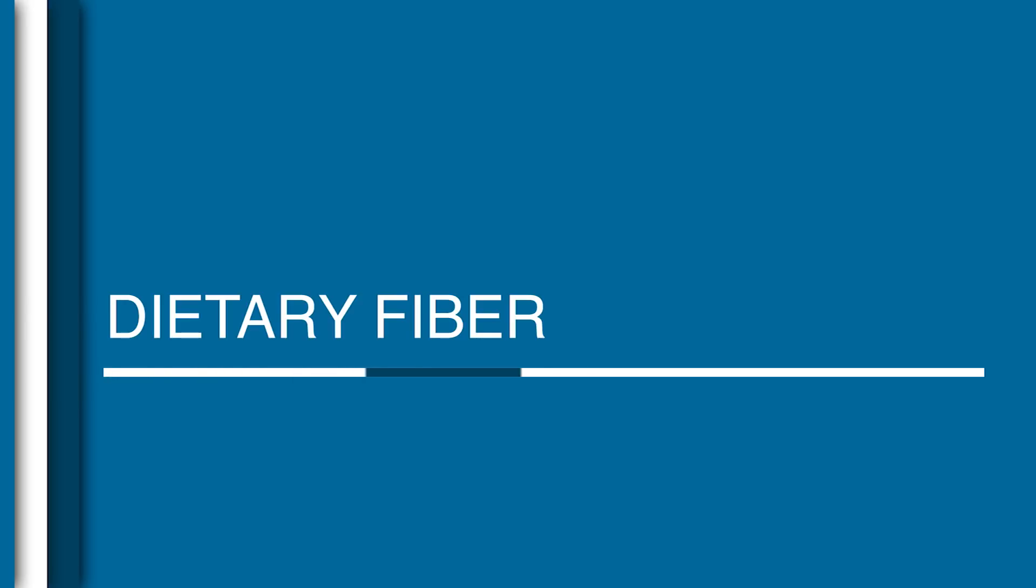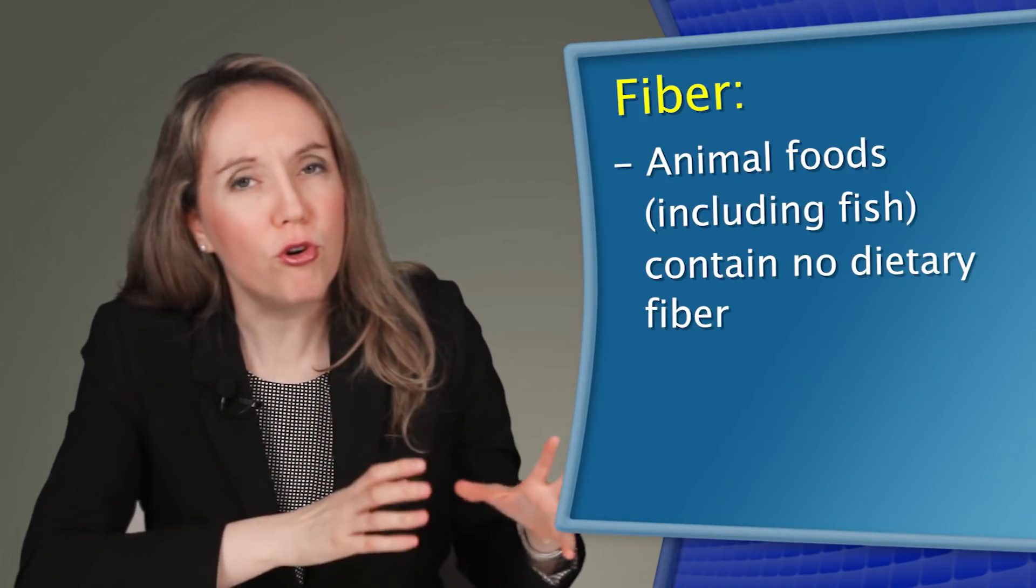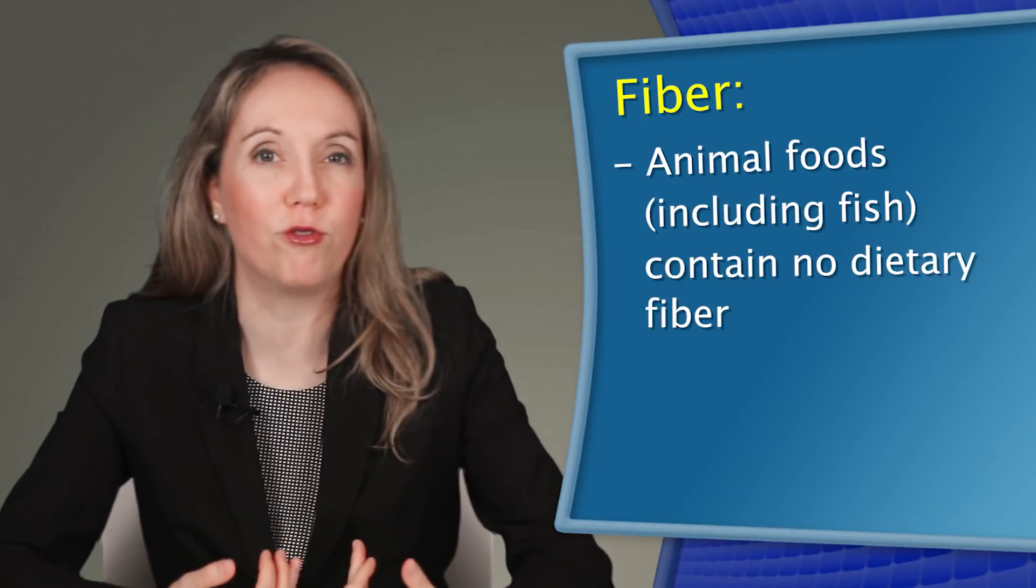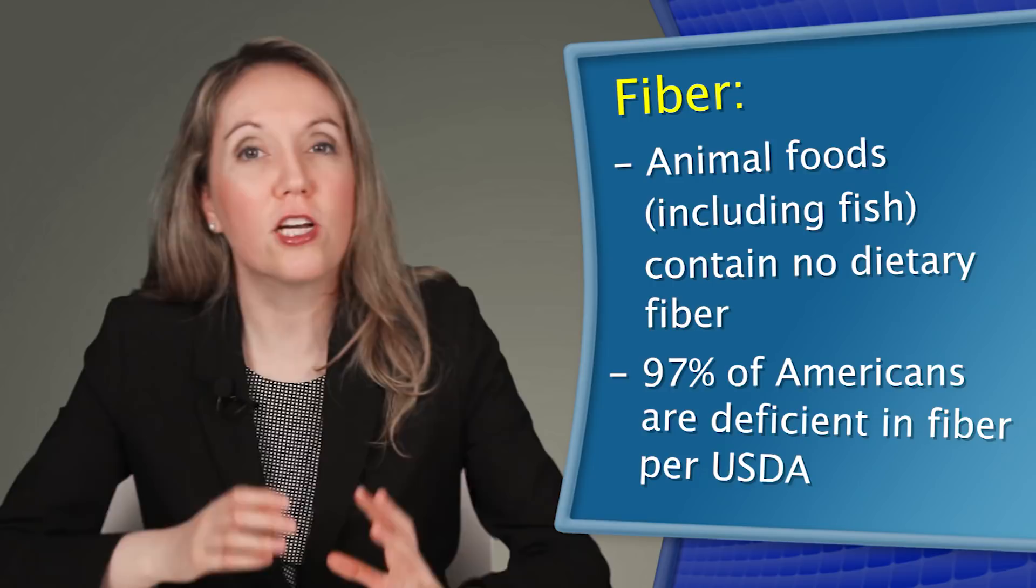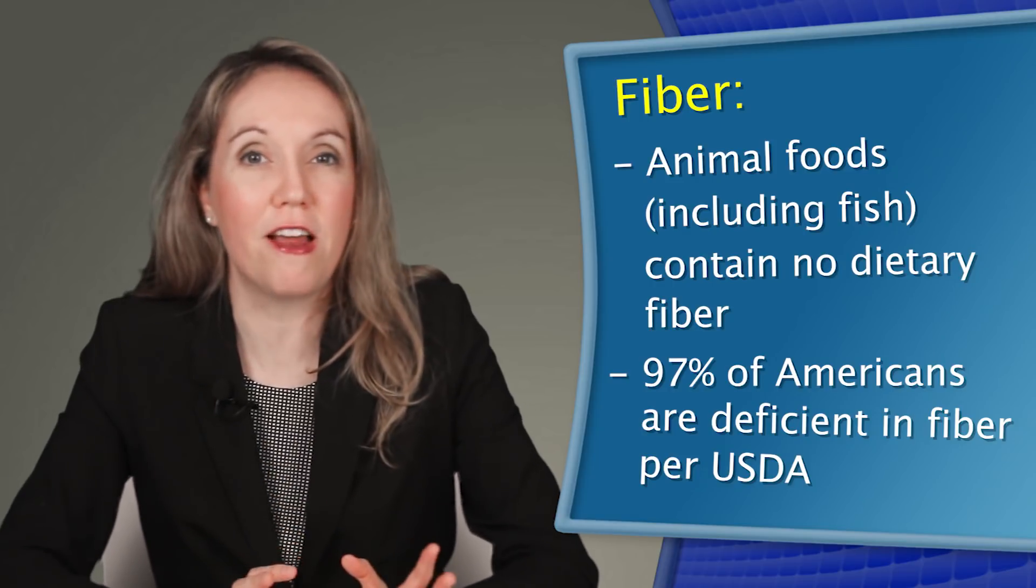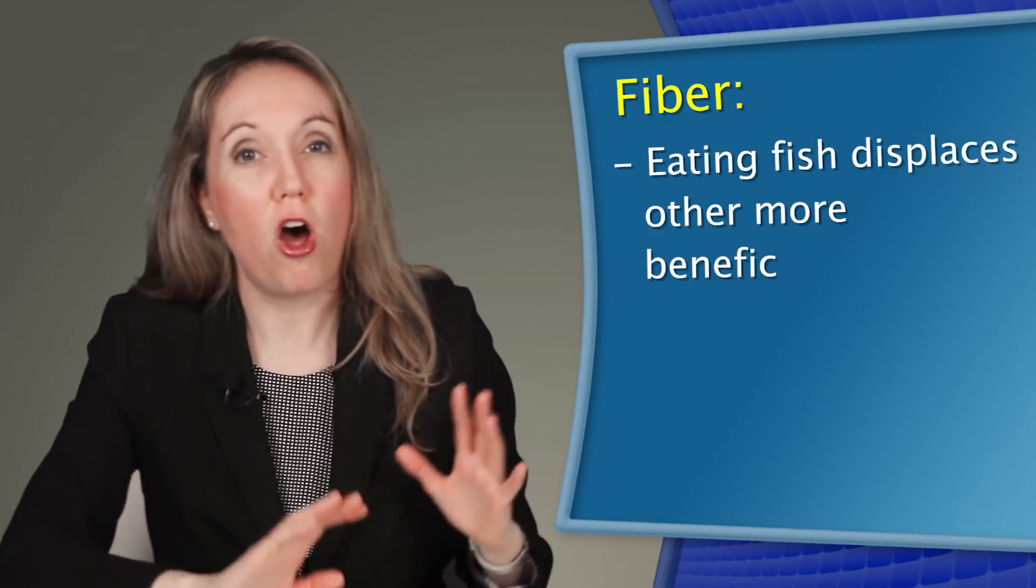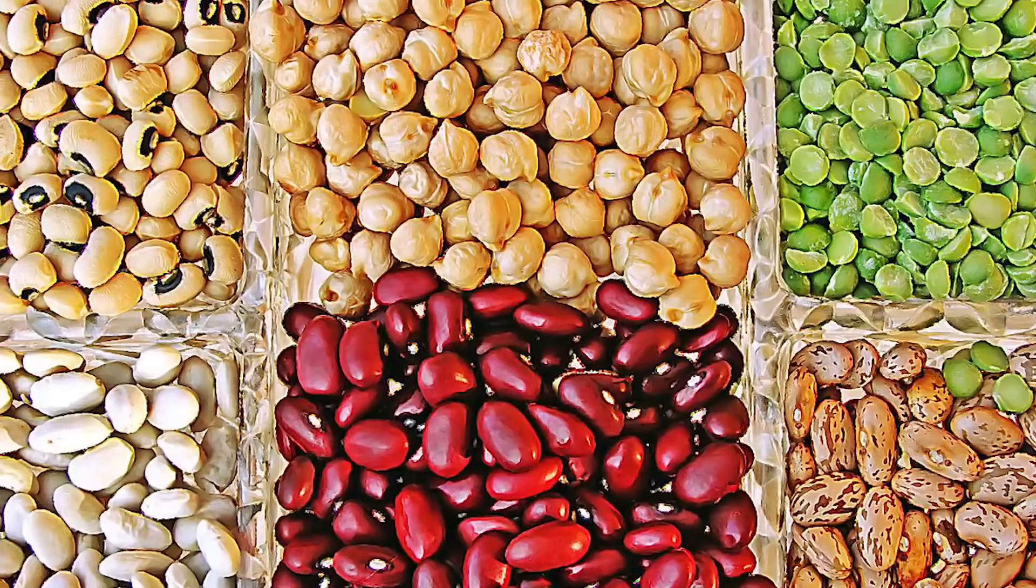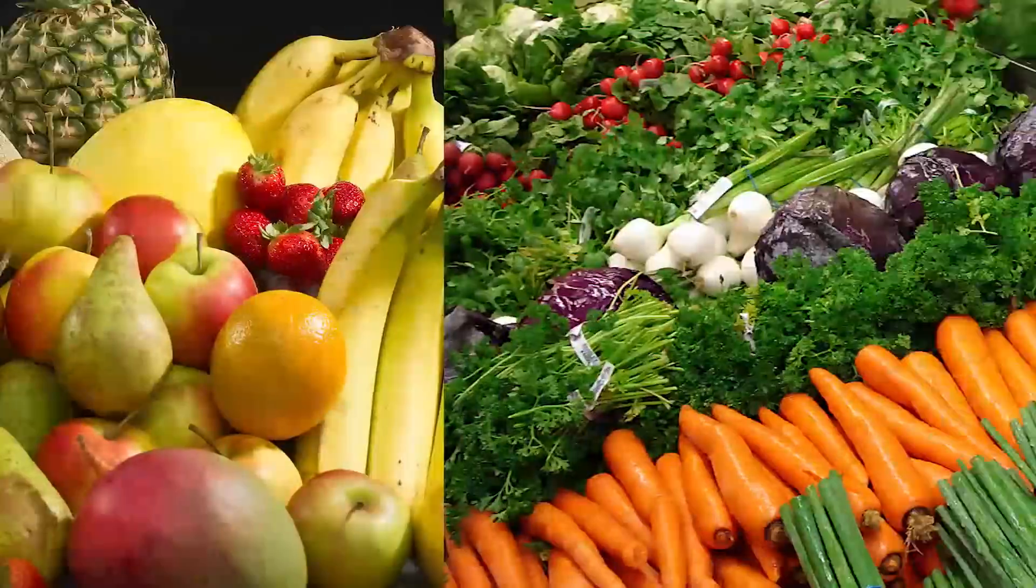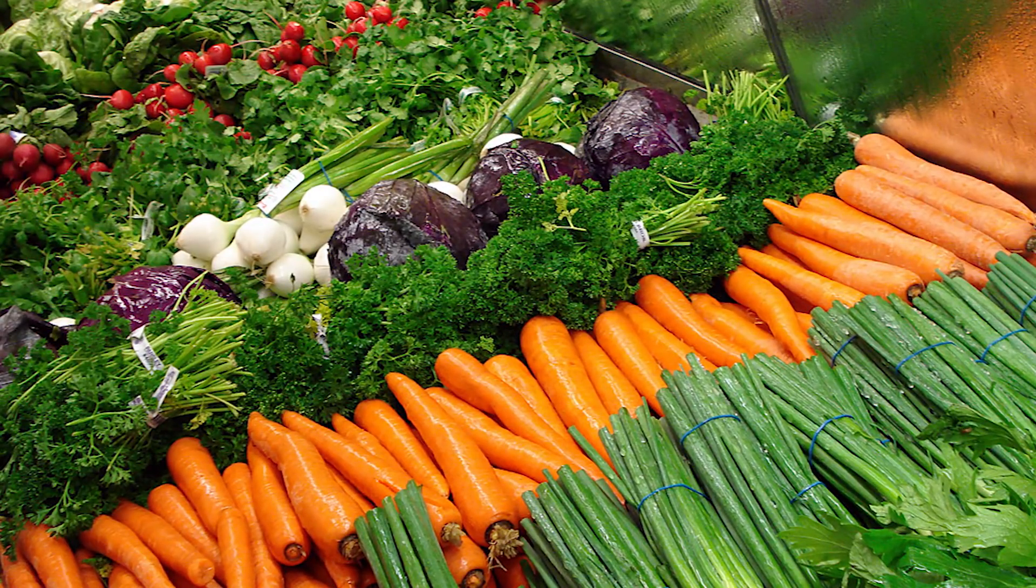Not one single fish anywhere in the world contains even one gram of fiber, which in itself makes it a poor choice as a health-promoting food. Fiber deficiencies are pretty ubiquitous in this country, because most people don't get near enough fiber in their diet. So when we eat fish, it displaces other more beneficial foods that we could be eating, like legumes or fruits or vegetables, that do have fiber, along with many other phytonutrients and antioxidants.